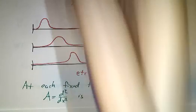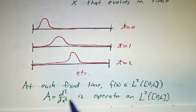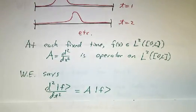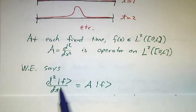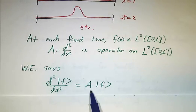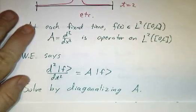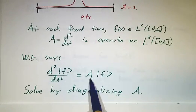And the right hand side of the wave equation involves a second derivative with respect to x. That's just an operator on L2. So the wave equation is saying that the second derivative of our vector with respect to time is this operator acting on our vector. And we solve that by diagonalizing this operator.